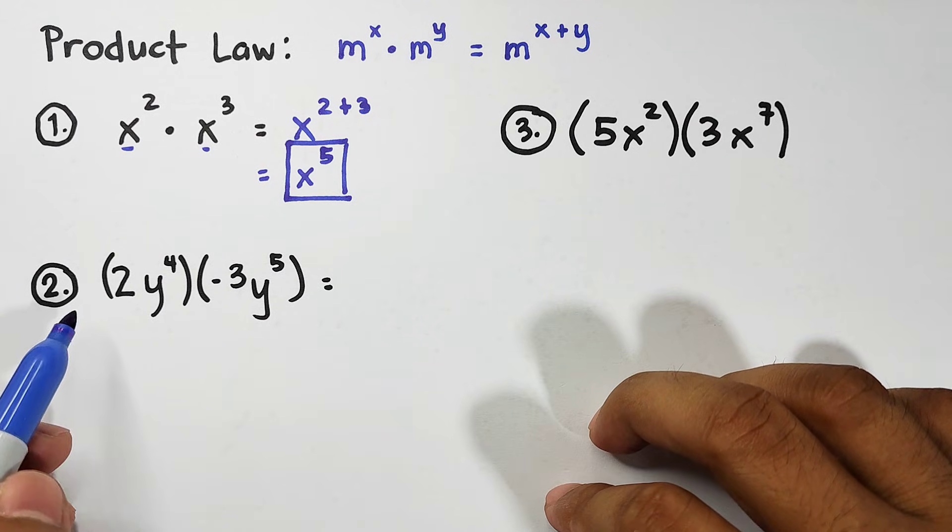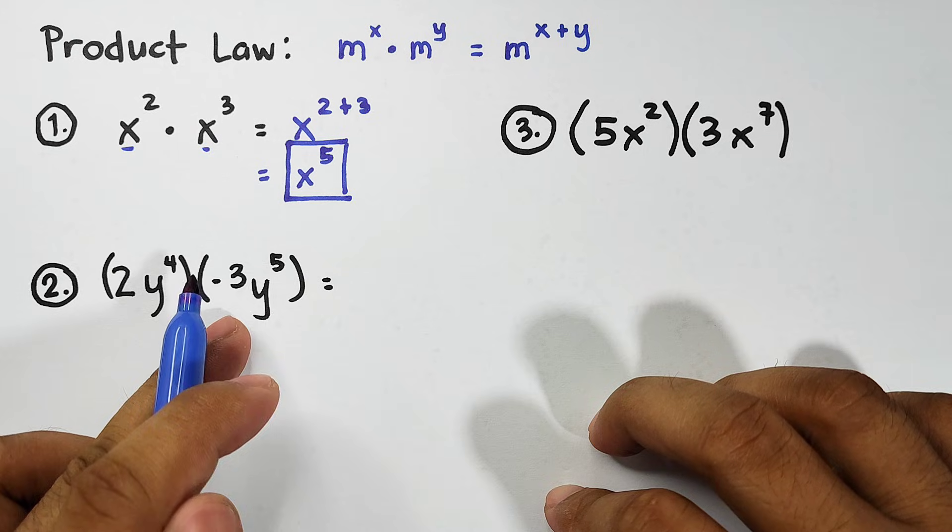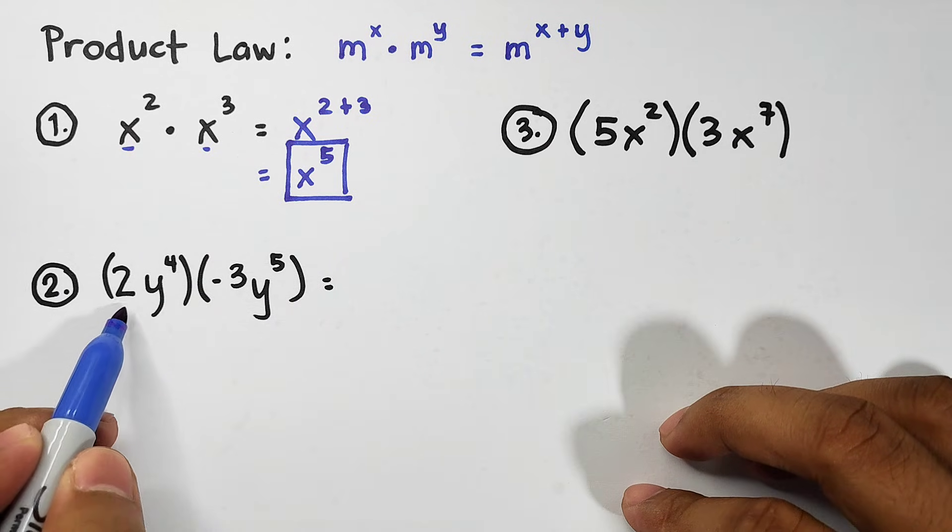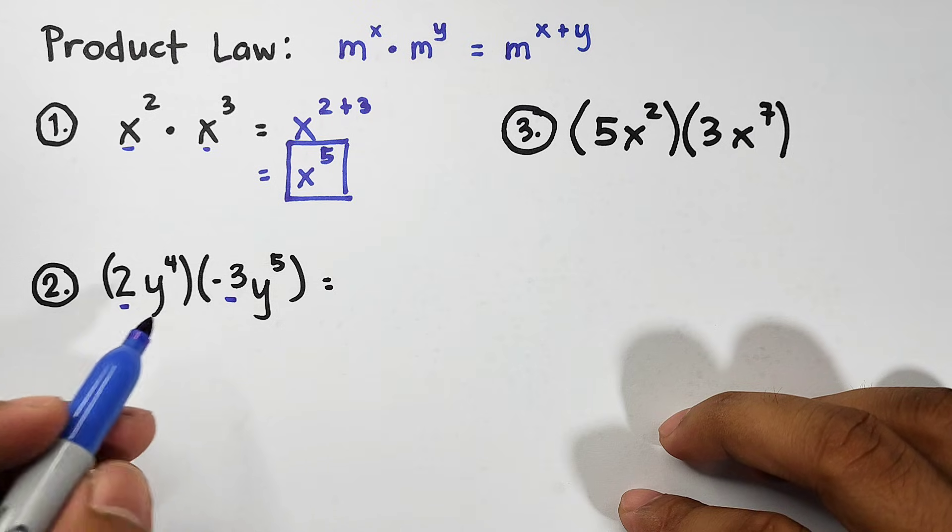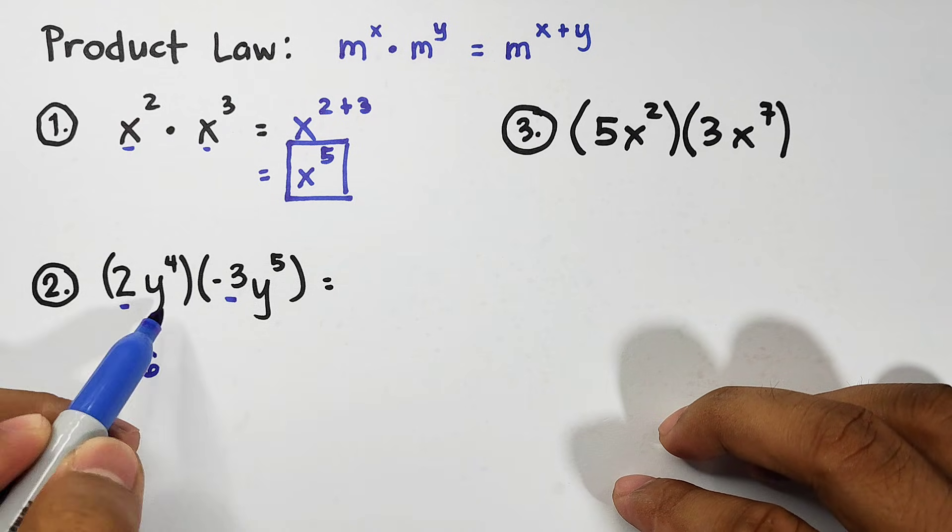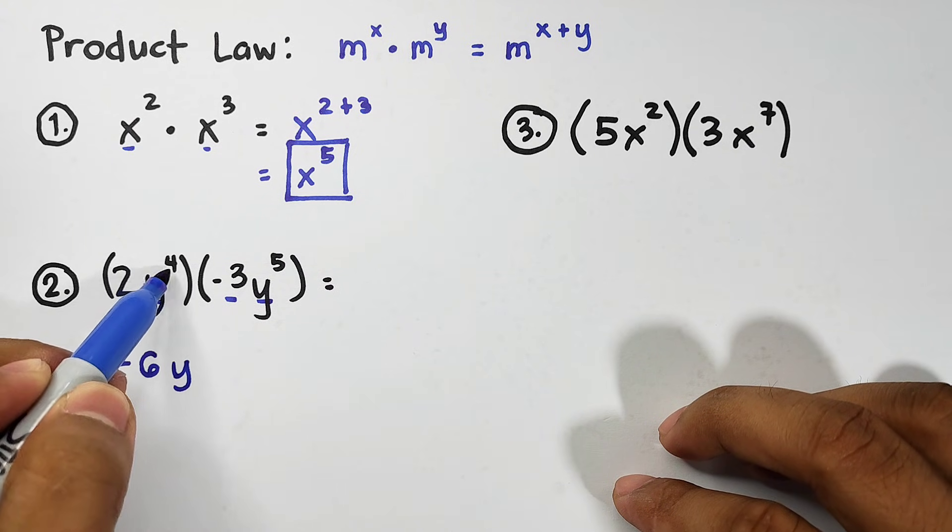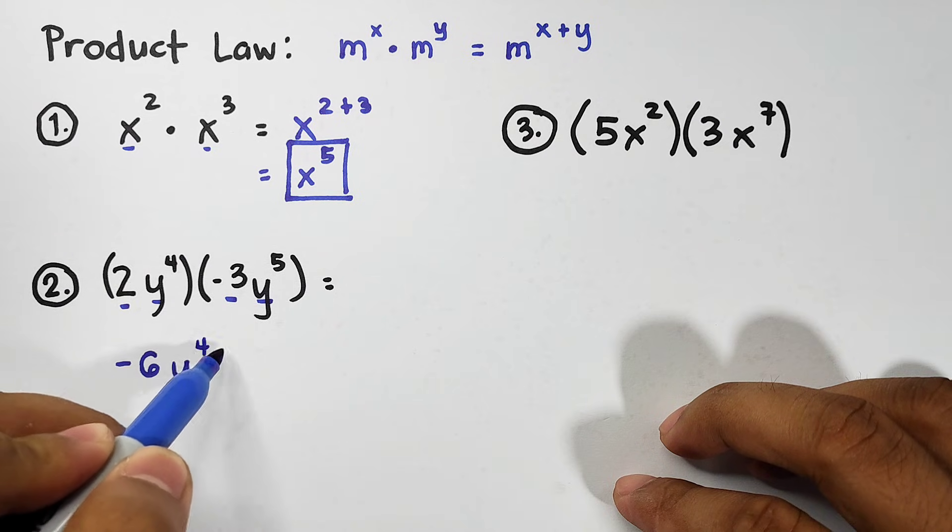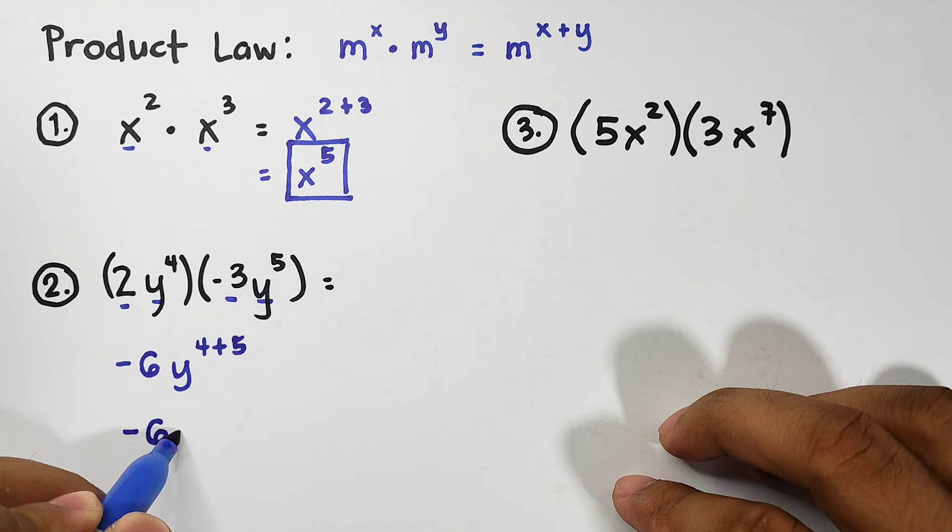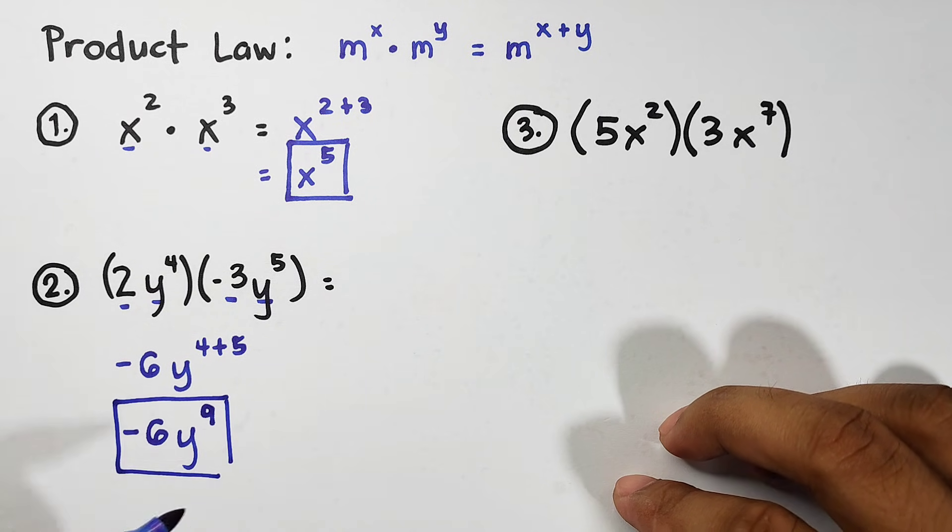Let's move on to item number two. For number two, we're using parentheses. It implies multiplication. So, we have 2y to the fourth power times negative 3y to the fifth power. So, we have coefficients of 2 and negative 3. So, basically, multiply them. That is, 2 times negative 3. That would give you the answer of negative 6. Right? That is negative 6. Now, let's deal with the variable y. For the variable y, since they are the same, copy your variable y, then add exponents 4 and 5. So, that is 4 plus 5. So, what we have here is to simply copy negative 6, copy the variable y, then add exponents 4 plus 5, and that is equal to 9. And this is now the product of item number 2.